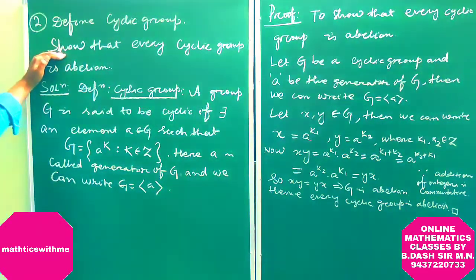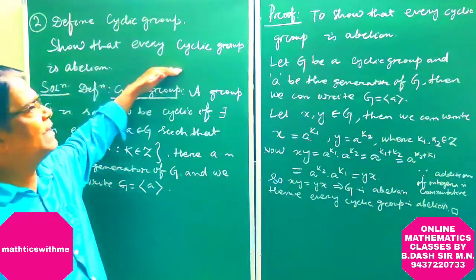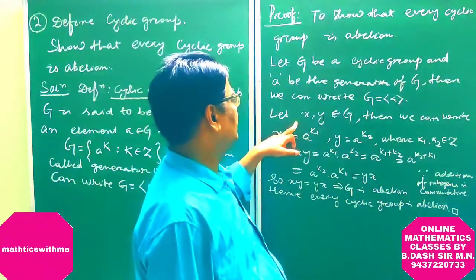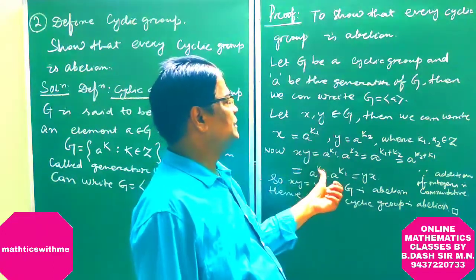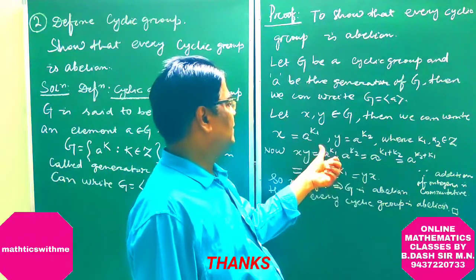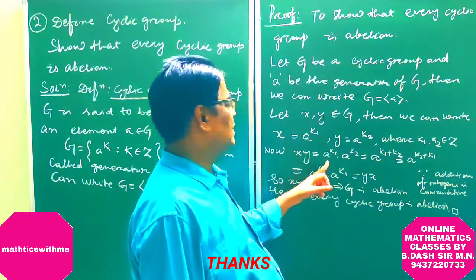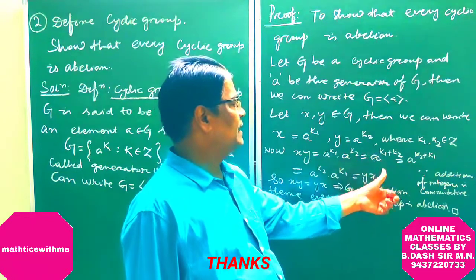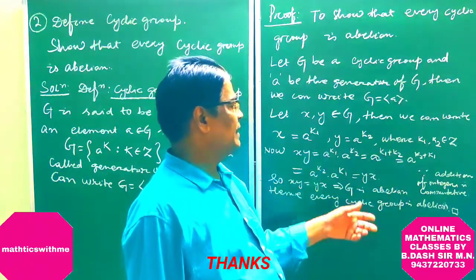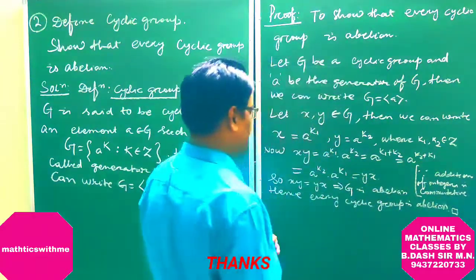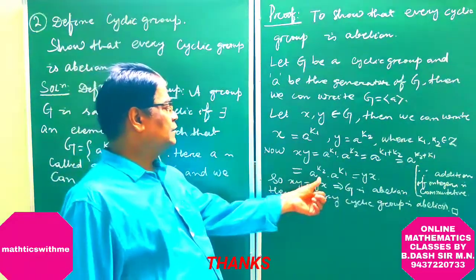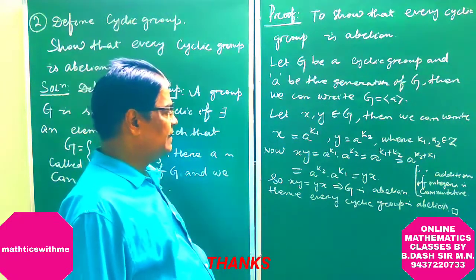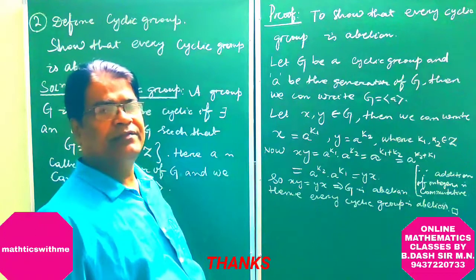For the second part, we prove every cyclic group is abelian. We know G is cyclic; let A be its generator. Let X and Y belong to G, so X equals A to the power K1 and Y equals A to the power K2, where K1 and K2 belong to Z. Now, X times Y equals A to the power K1 times A to the power K2, which equals A to the power K1 plus K2. We can write this as A to the power K2 plus K1 because addition of integers is commutative. This equals A to the power K2 times A to the power K1, which equals Y times X. So X times Y equals Y times X, implying G is abelian. Hence every cyclic group is abelian.